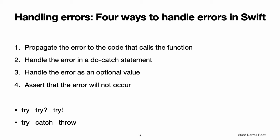There are four ways to handle errors in Swift: you can propagate the error from a function to the code that calls the function, handle the error using a do-catch statement, handle the error as an optional value, or assert that the error will not occur. Each approach is described in a later section.